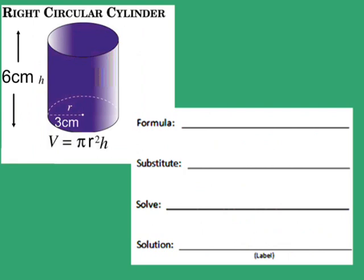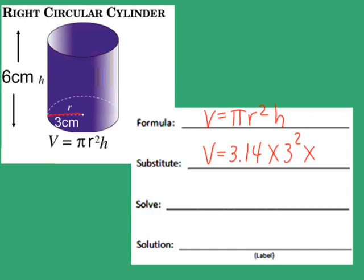Here's another formula for volume — this is for finding the volume of a cylinder. Starting with the formula: pi times radius squared times the height. We're going to use 3.14 for pi, so I'm going to substitute that in. We multiply that times our radius, which is 3, square the radius, then multiply by the height, which is 6.